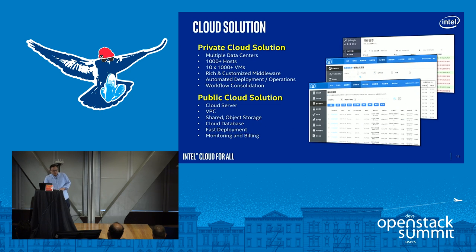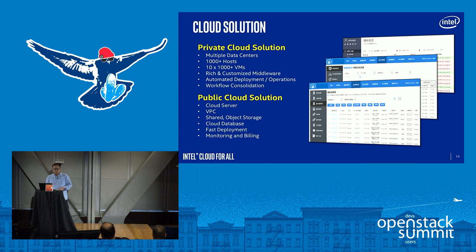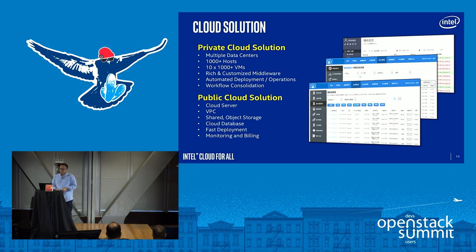This is the overview of their current cloud clusters. They have two types of cloud solutions: private cloud and public cloud. Their private cloud is a multi-data center setup running around 1,000 hosts and 10,000 virtual machines, providing rich customer middleware and automated deployment and operations. Their public cloud solution includes cloud servers, VPC, shared object storage, and cloud database, with faster deployment, monitoring, and billing.